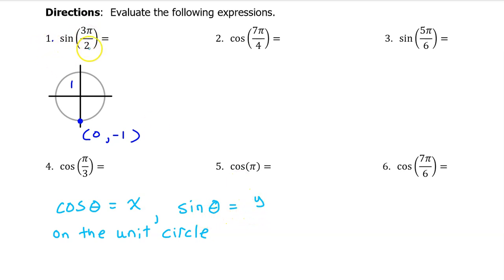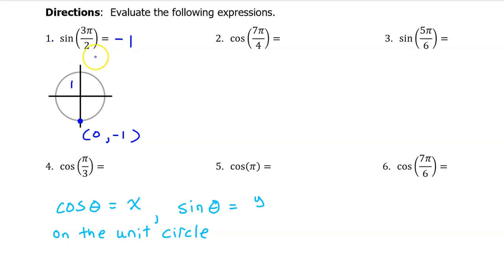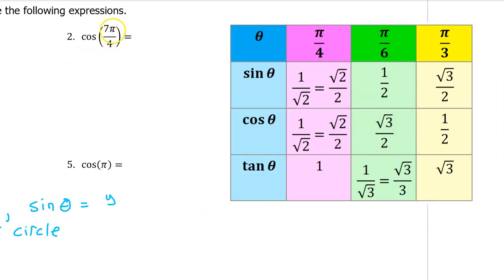So the sine of 3 pi over 2 will simply be the y value, which is negative 1 — that's the answer to number 1. When you have an angle that is not a multiple of pi over 2, you can evaluate based on the values on this chart. I need you to memorize these 9 values. If you have not already done so, pause the video and study these — you should be able to write this chart from memory before starting your next test or quiz.